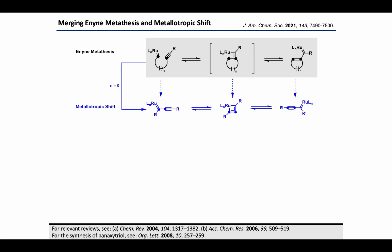First, enyne metathesis, which involves a metathesis reaction between an alkene and an alkyne, leading to the formation of 1,3-dienes. This reaction is catalyzed by a ruthenium-alkylidene carbene complex.